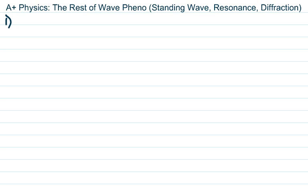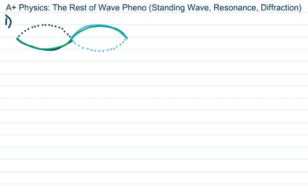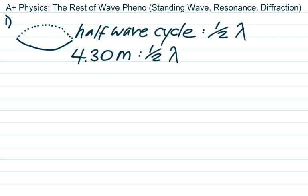In the jump rope example, the person in the middle is at the antinode — maximum constructive interference, highest amplitude. Where the people hold the rope there's a node — no motion. The problem says it's 4.3 meters from person to person. Looking at the picture, that's only half of one wave cycle, so 4.3 meters is half the wavelength. Therefore the wavelength must be 8.6 meters.